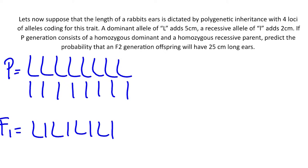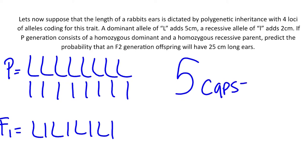This heterozygous F1 generation will have 25 centimeter long ears. In order to have at least 25 centimeter long ears, we know that we have to have at least five dominant alleles. So we are looking for five capital letters, which equals dominant alleles.